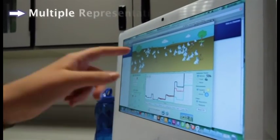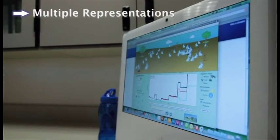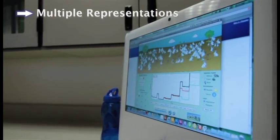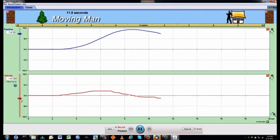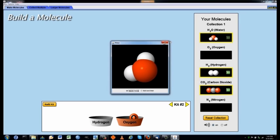There are a number of things that students see when they sit down in front of a simulation. We try to use multiple representations: objects like bicycle pumps, graphs, and pictures of things like molecules.